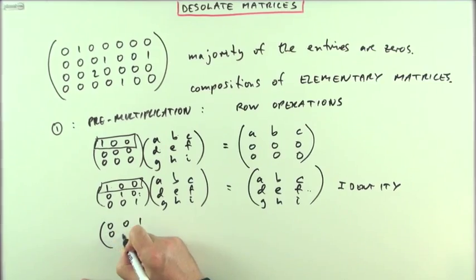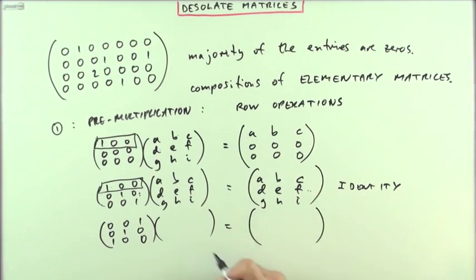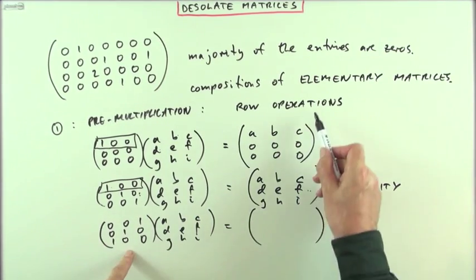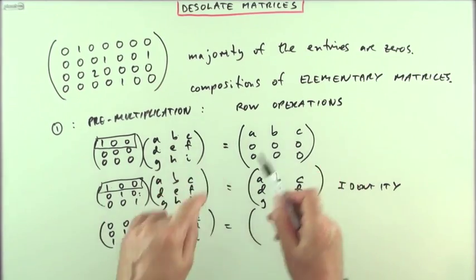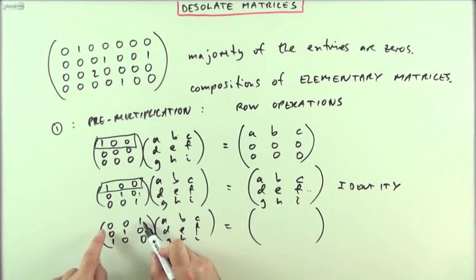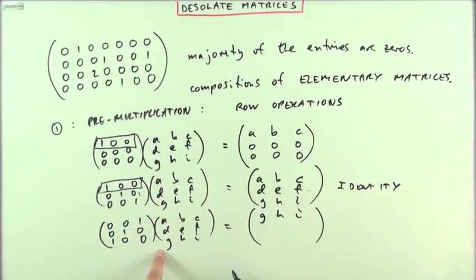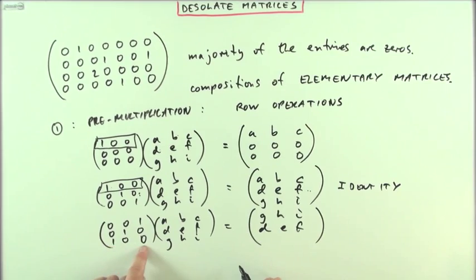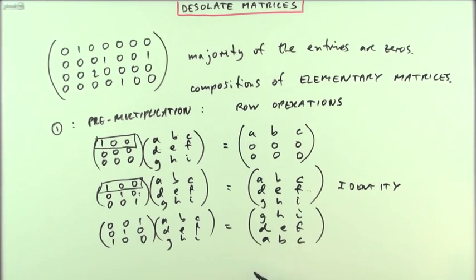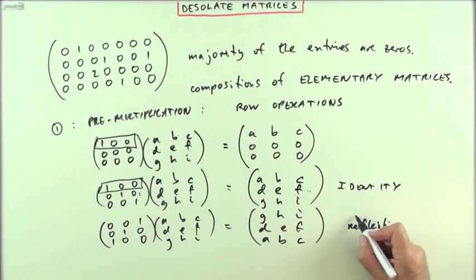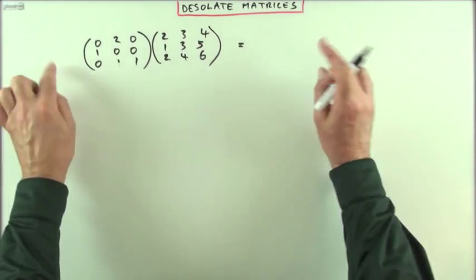What about the reverse of that - what should this do? Using the row operations equivalent to this pre-multiplication: this says the first row in the product will have none of the first row, none of the second - it takes the third row and puts it in the first position. This says in the second row position I'll have the second row DEF, and in the third row position I'll have the first row ABC. That's carried out a row reflection.